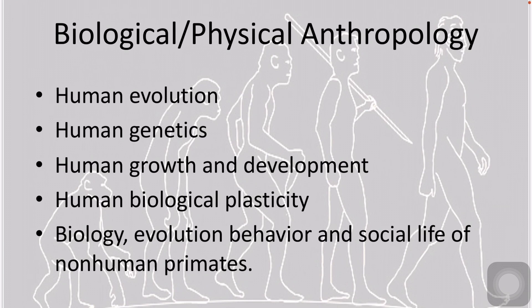Genetics, which developed later, enlightens us about the causes and transmission of this variety. However, it isn't just genes that cause variety — during any individual's lifetime, the environment works along with heredity to determine biological features. For example, people with a genetic tendency to be tall will be shorter if they are poorly nourished during childhood.